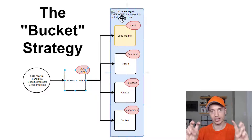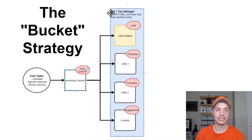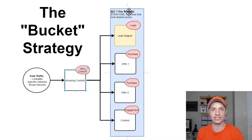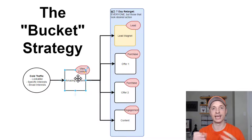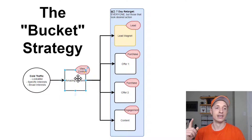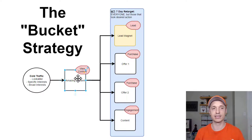The next stage is your bucket. This whole blue area is what I consider my bucket. WT stands for warm traffic. I do either a 7-day retarget, or you could do a 10-day or 14-day retarget — whatever is relevant to your business. You're retargeting everyone that has engaged with you: people that visited your amazing content, people that found you organically through Google and landed on your website, or people that engaged with your Facebook page.